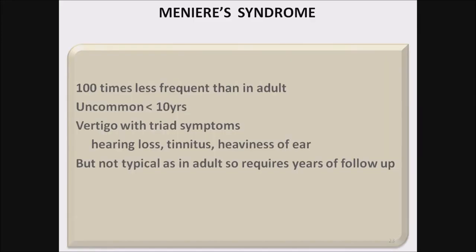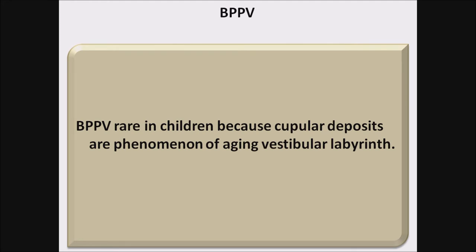Meniere's syndrome is 100 times less frequent in children than in adults, because Meniere's disease is a disease of the damaged inner ear, and chances of inner ear damage increase with age — that's why it is less common in children and uncommon under 10 years of age. Vertigo with the triad of hearing loss, tinnitus, and fullness of ear, though not as typical as in adults, requires years of follow-up. BPPV is also very rare in children because cupular deposits are a phenomenon of aging of the vestibular labyrinth.